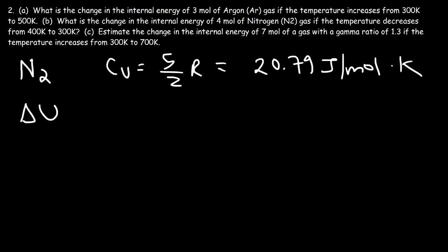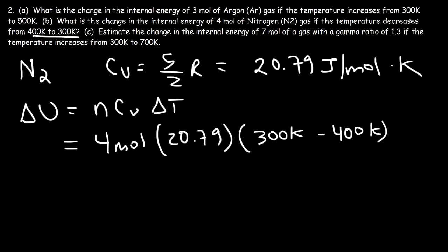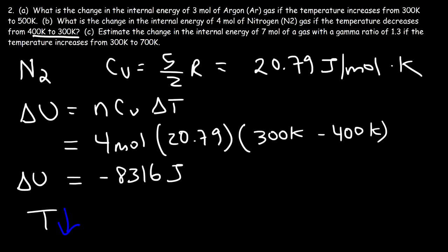Using delta U equals N times Cv times delta T: we have 4 moles of N₂ gas, Cv is 20.79, and the change in temperature is final minus initial — 300 minus 400 — which is negative 100 Kelvin. So 4 times 20.79 times negative 100 gives negative 8,316 joules. As the temperature decreases and the gas cools down, the internal energy decreases as well, which is why the change is negative.